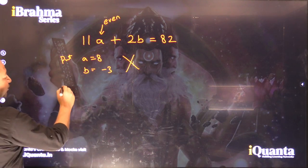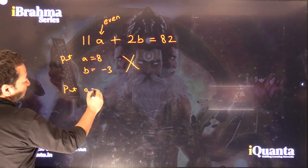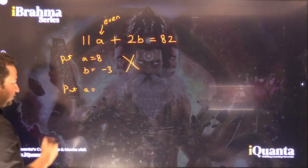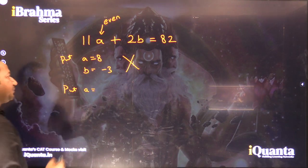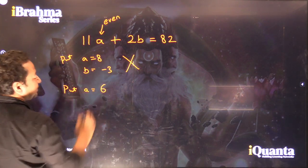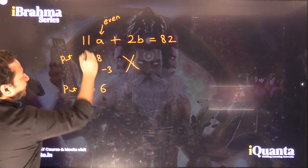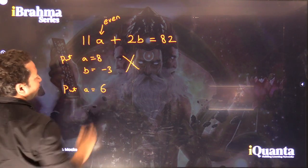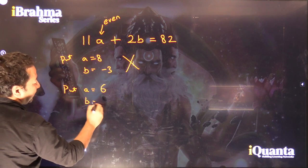Now we will try the second largest single-digit even number in place of A. That will be 6. So if we put A as 6, 11 × 6 = 66, what do we get for B? We get 8.